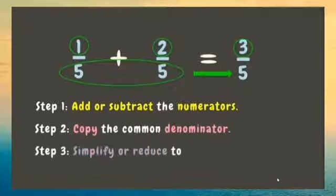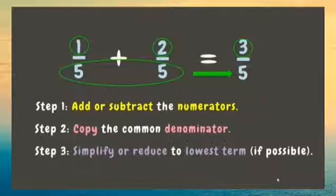we copy the common denominator, which is five. Lastly, we simplify or reduce the fraction to its lowest term, only if possible. Since three-fifths is already in its lowest term, that is our final answer.